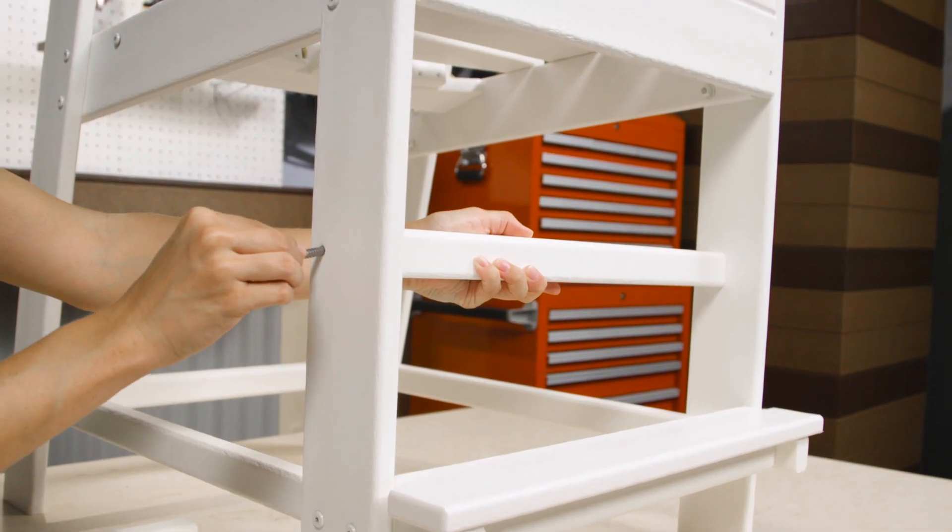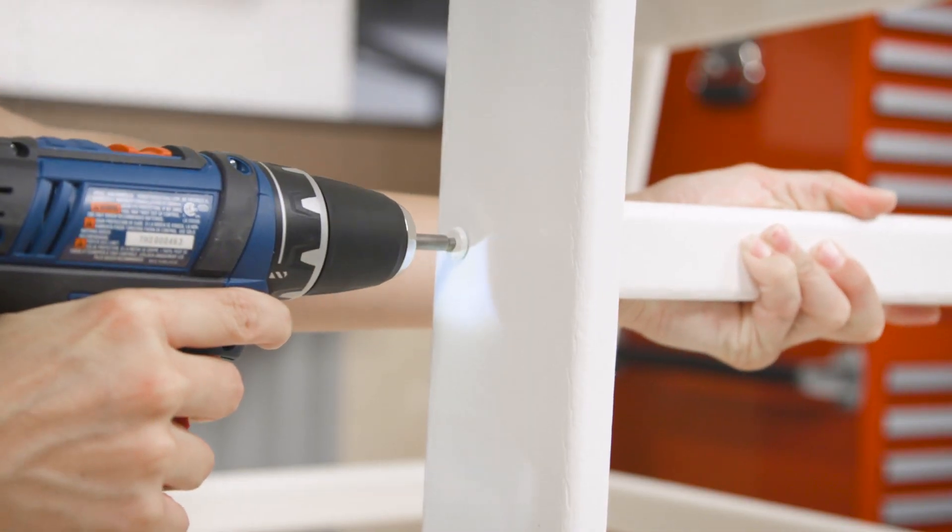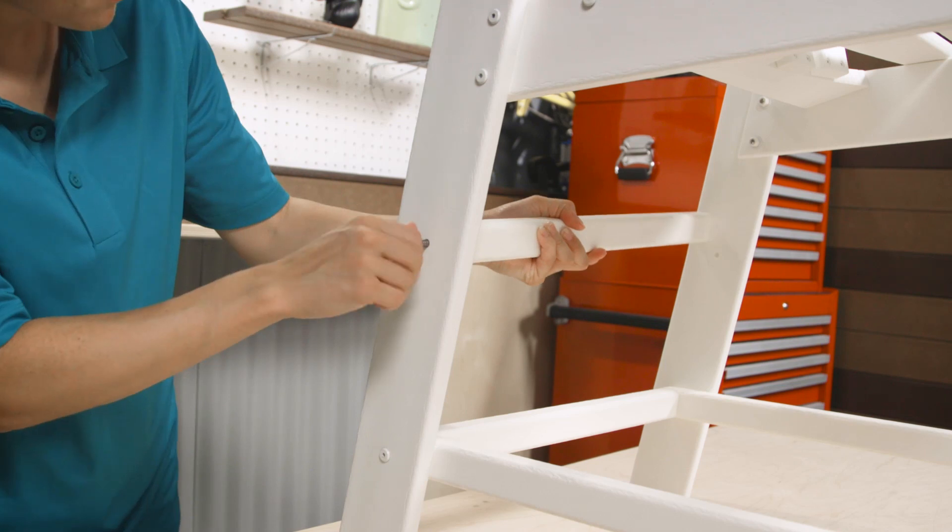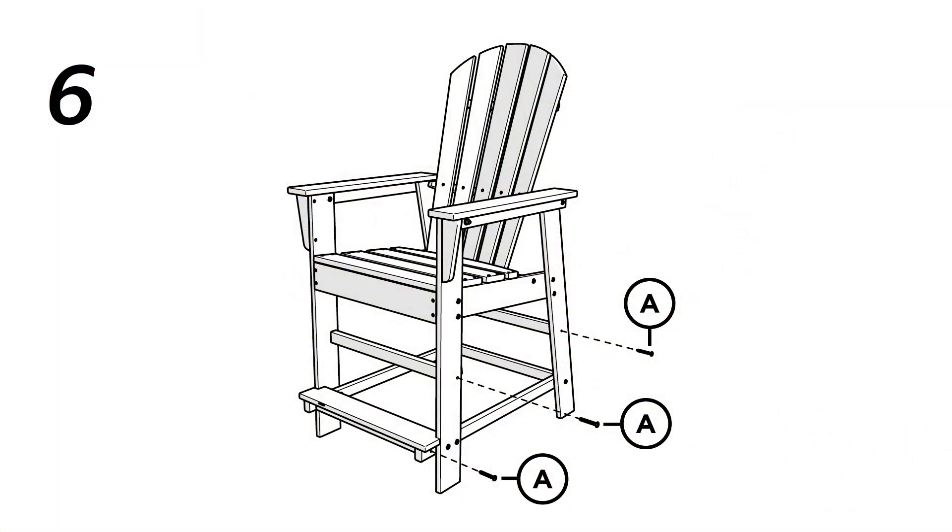Fit the braces between the legs as shown and insert two 2 inch screws. Repeat this step to secure the left side.